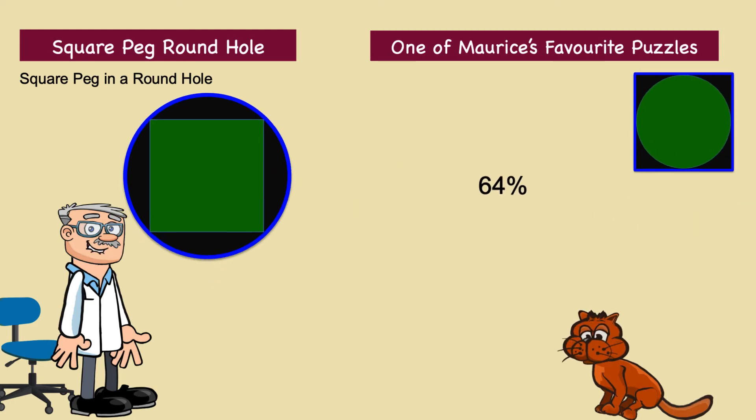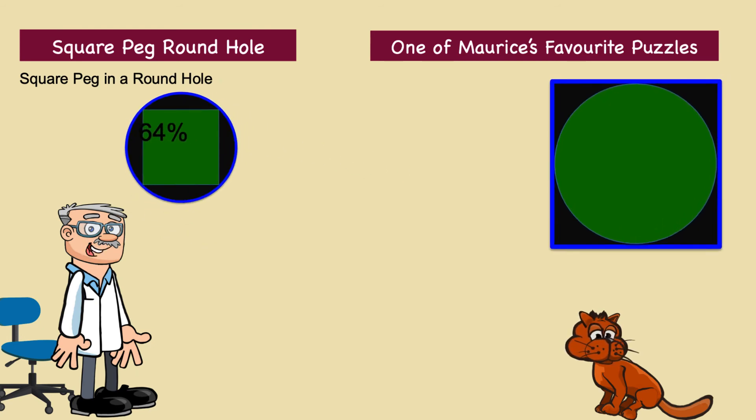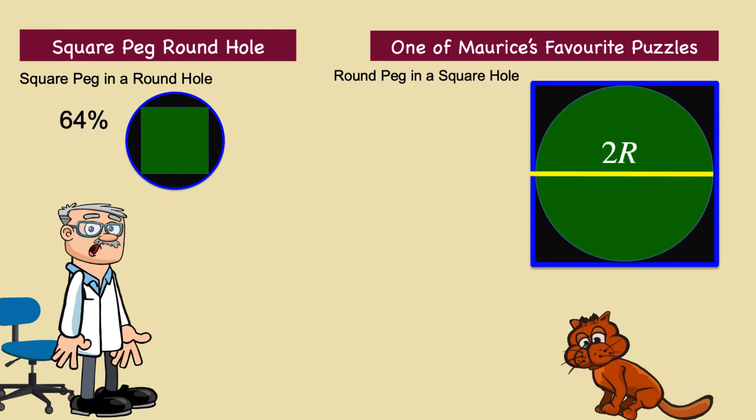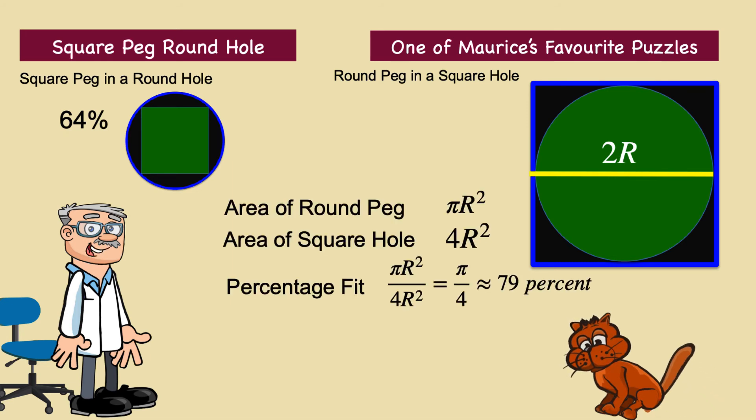Now we calculate the other way round. A round peg in a square hole. The circle's radius is again r, so the square hole has a side of 2r, and an area of 4r squared. The round peg has an area of pi r squared. So, the ratio of the round peg's area to the square hole is around 79%. This means a round peg in a square hole is a better fit than a square peg in a round hole.